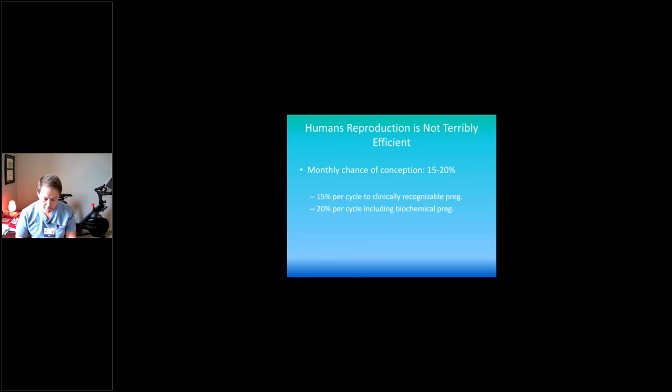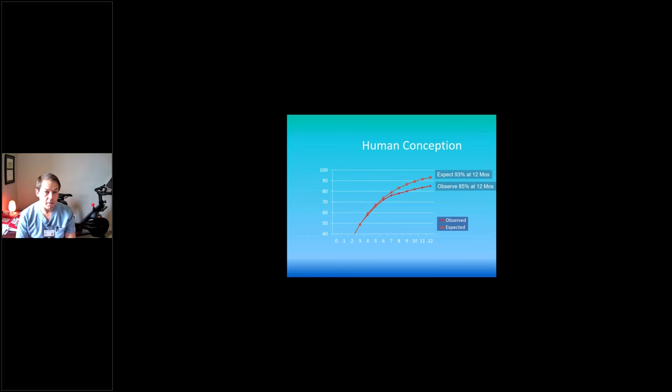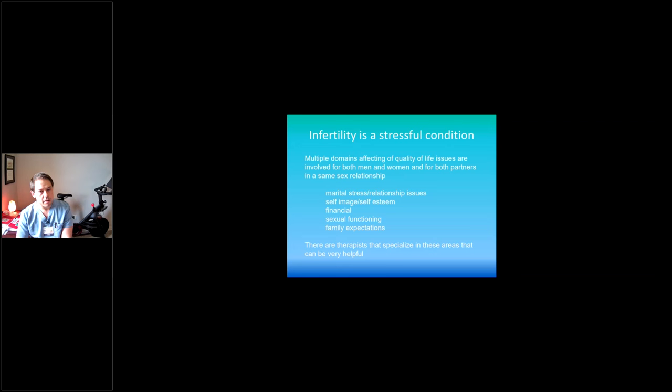One thing to emphasize to patients is that human reproduction is terribly inefficient. It's really not what we would call efficient, at least for all animals considering. I mean, occasionally you get that patient that the month she comes off birth control is when she gets pregnant. But I think it's important to normalize the fact that monthly chance of conception for any just average couple that's trying is somewhere around 15 to 20 percent. 15 percent per cycle to clinically recognize the pregnancy, 20 percent per cycle, including a biochemical. But while inefficient, most couples do cross this 50 percent line after three to six months of trying.